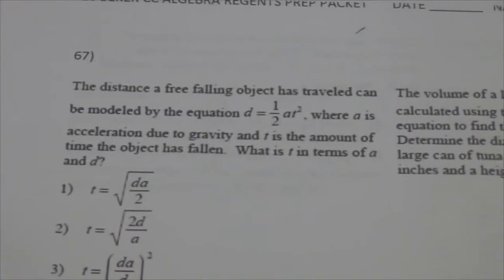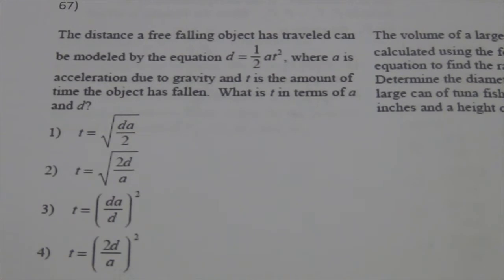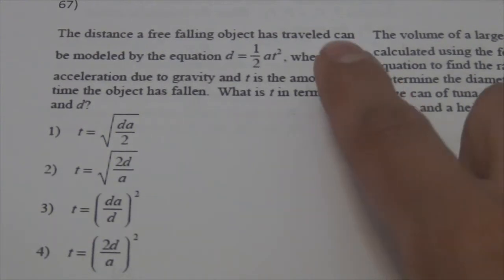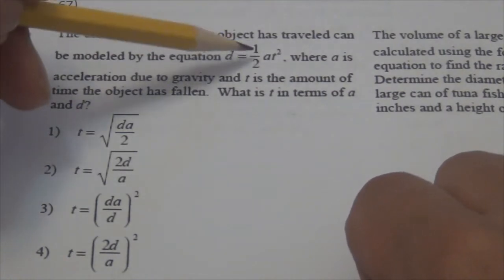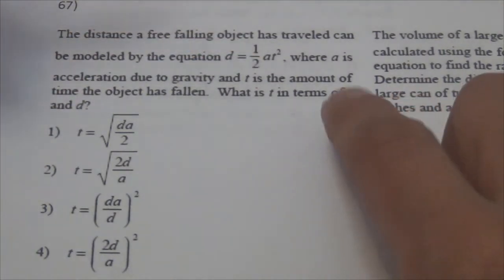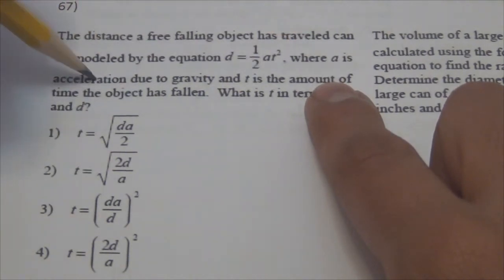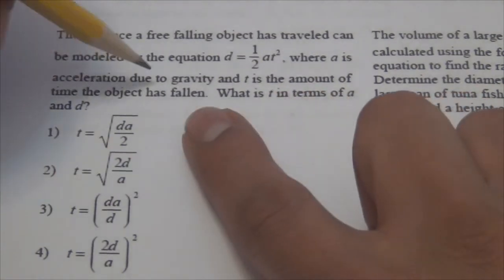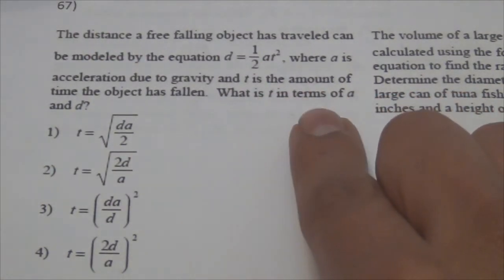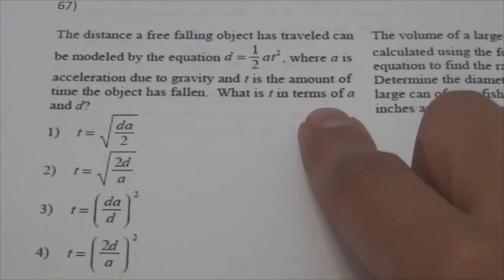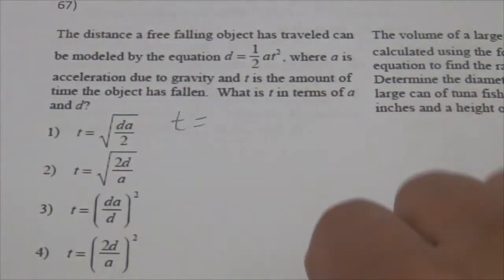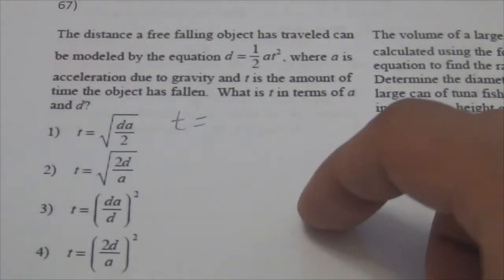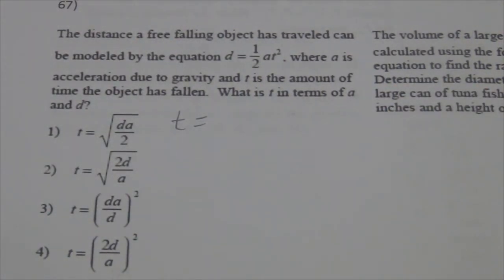Problem 67. The distance a free-falling object has traveled can be modeled by D equals 1/2 A T squared, where A is the acceleration due to gravity and T is the amount of time the object has fallen. What is T in terms of A and D? I need to solve for T — at the end it has to be T equals something.